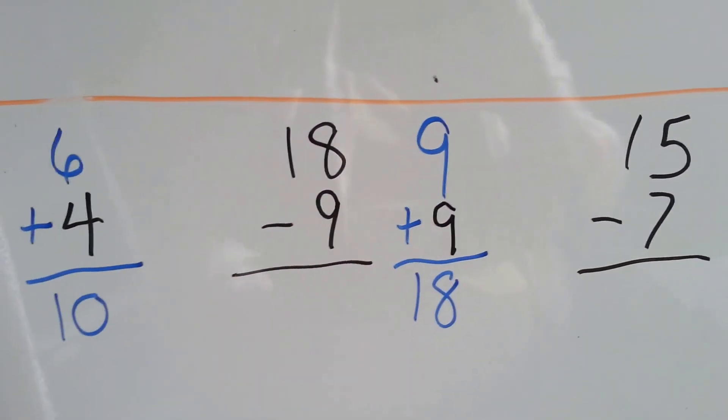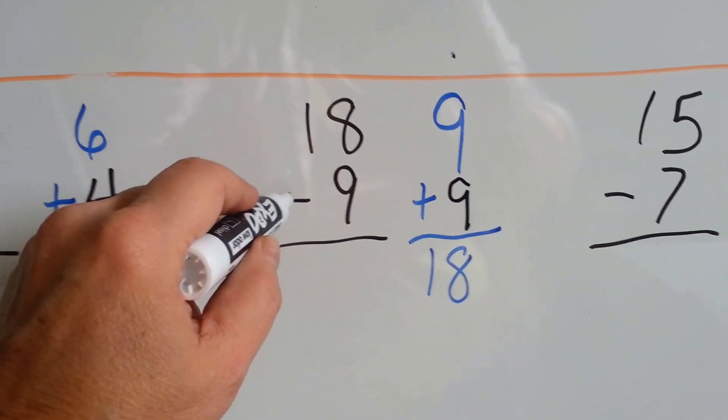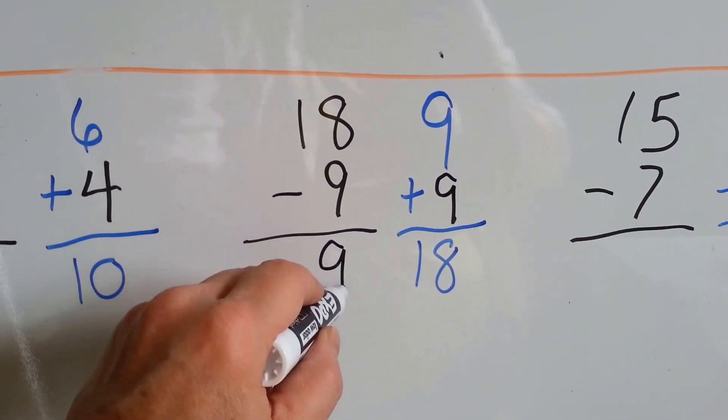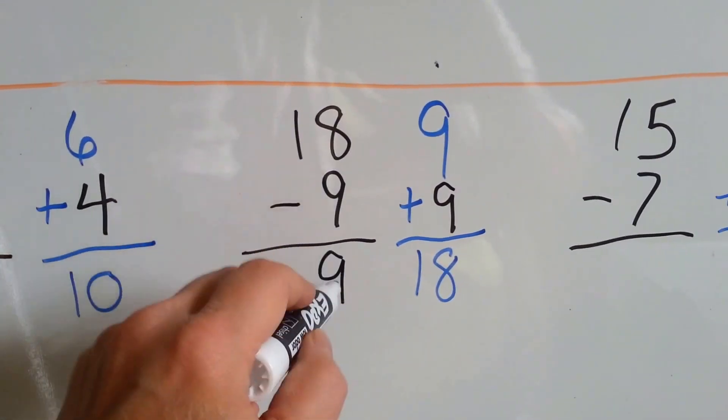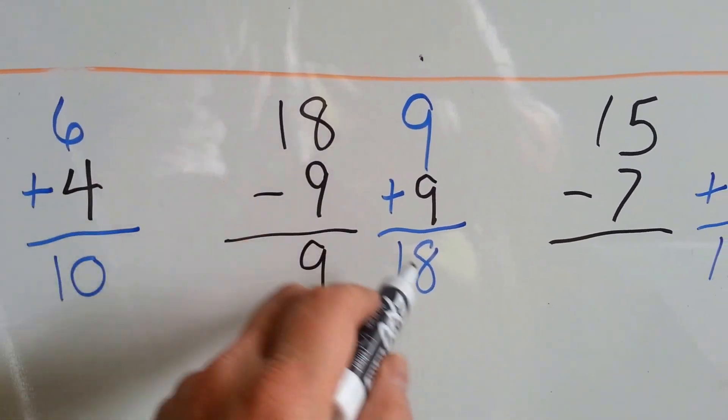9 plus 9 is 18. That means 18 take away 9 is 9. See the two 9s here? Like there's two 9s there and the 18?